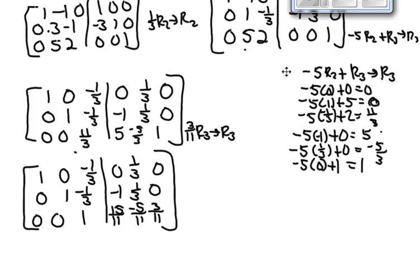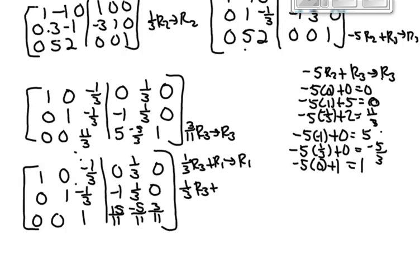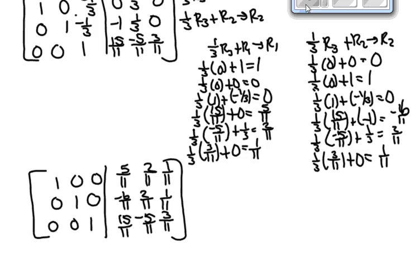The calculations are shown here. Now I need this negative 1/3 and this other negative 1/3 to become 0. Using row 3: 1/3 row 3 plus row 1 is my new row 1, and 1/3 row 3 plus row 2 is my new row 2. The calculations are shown here, and now we have RREF. So we know A inverse is equal to this 3x3 matrix.